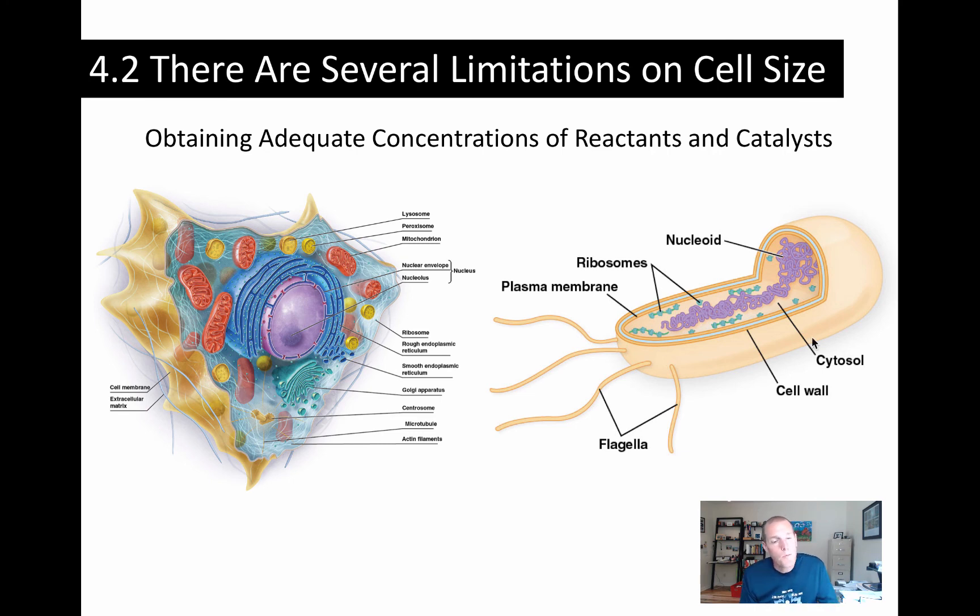And so one of the problems that cells face is, as they get bigger, as we go from prokaryotes to eukaryotes, biochemistry will tend to slow down. And here's what you'll see, a slower growth rate is one of the consequences of that. These guys divide very quickly. Smaller genome, smaller volume, faster biochemistry, greater growth rates.